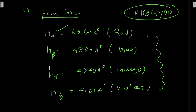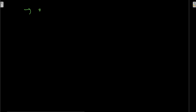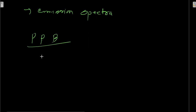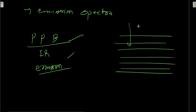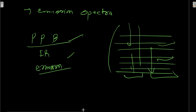The remaining series — Paschen, Brackett, and Pfund — will only follow emission spectra and emit infrared radiation. You did these in chemistry as well. No need to write each one here. You should see the transition diagram from NCERT once to understand which series is Balmer, which is Paschen, and so on. They will only ask short questions from this area since it is also part of chemistry.